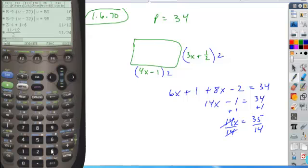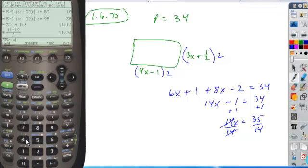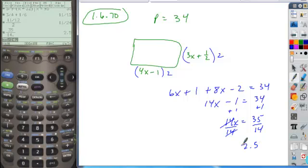And so here, if we divide by 14, we get 35 divided by 14. I'll put a decimal in there so I get my solution in decimal form, 2.5. So there's my x value.